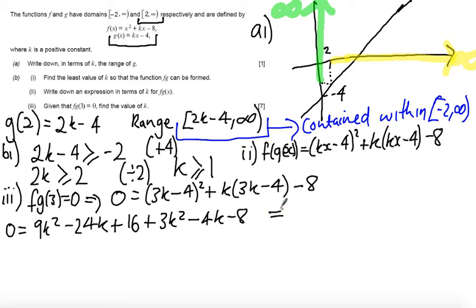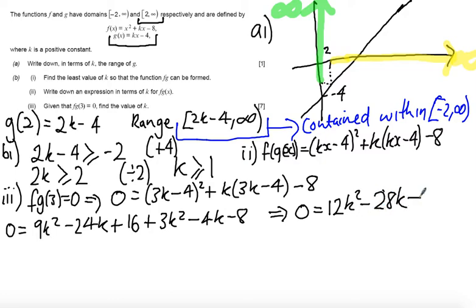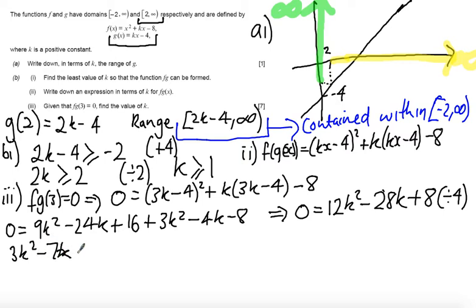When I expand and simplify this I get 9k squared minus 24k plus 16, plus 3k squared minus 4k minus 8. Tidying this up I get 0 equals 12k squared minus 28k plus 8. Solving this equation I've got a common factor of 4, so dividing everything by 4 I get 3k squared minus 7k plus 2 equals 0.